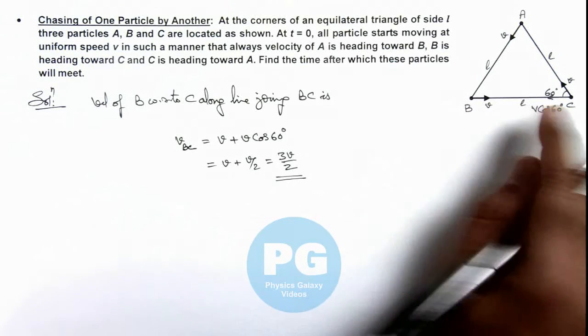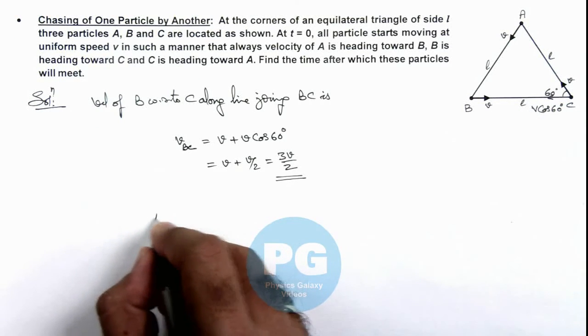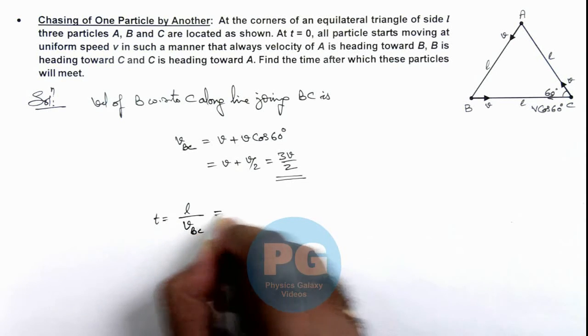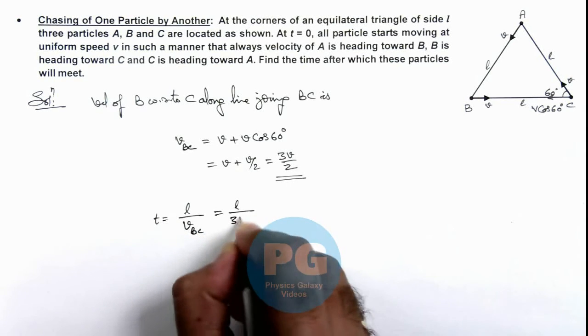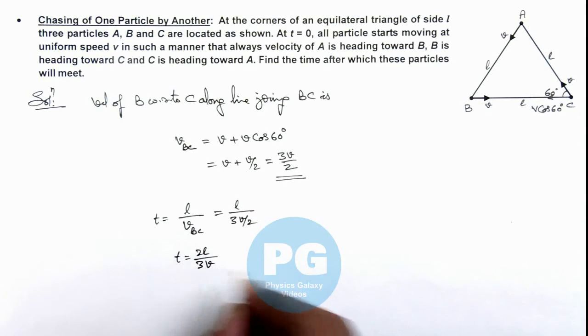So the distance l will be covered by these particles in a time we can write as l upon velocity of B with respect to C. This is l upon 3v by 2, so here time can be written as 2l by 3v. That will be the result of this problem.